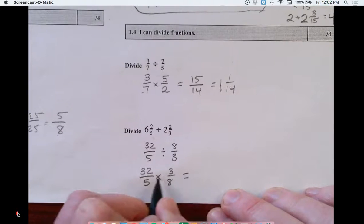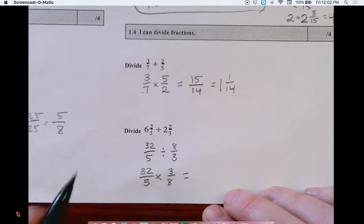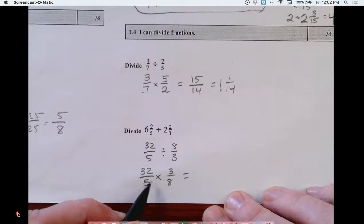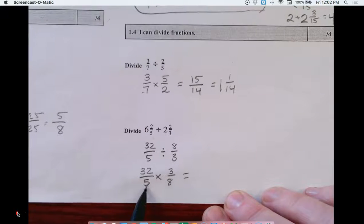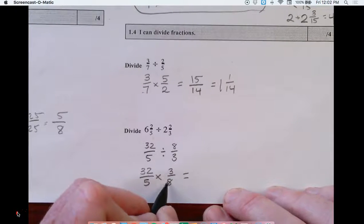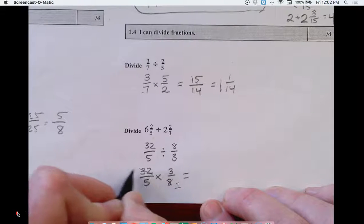From here, we could multiply straight across and then reduce. Or, I think it's much easier to reduce before we start the multiplication process. So three and five do not share a common factor besides one, but eight and thirty-two do. Eight divided by eight is one. Thirty-two divided by eight is four.